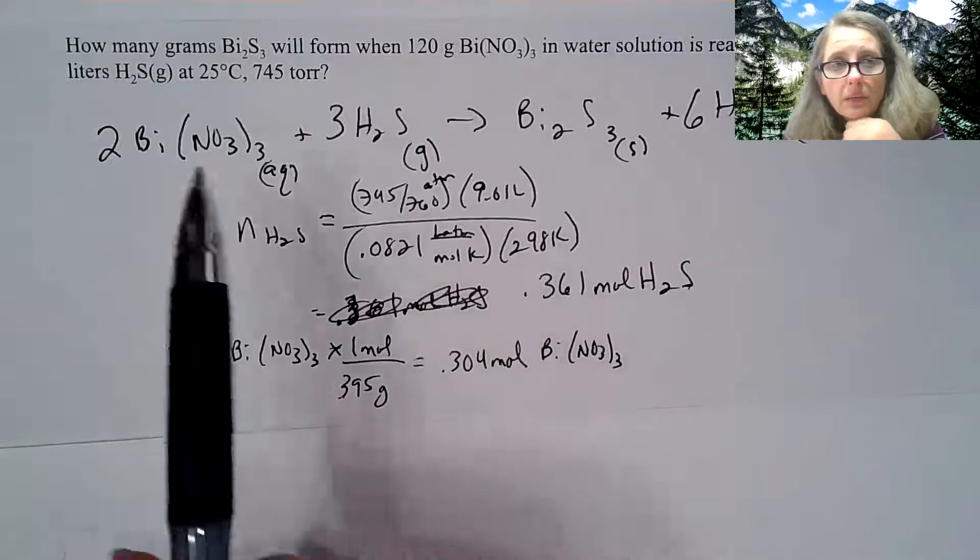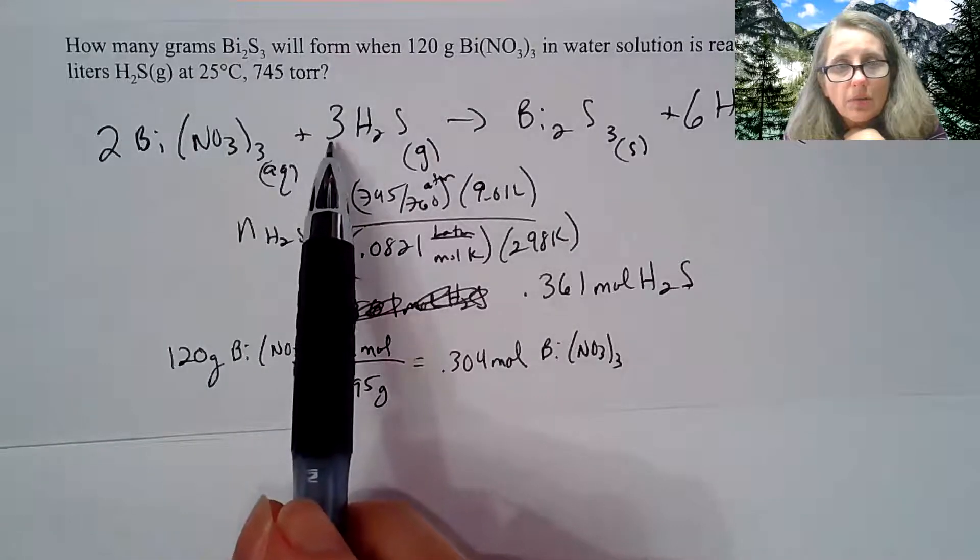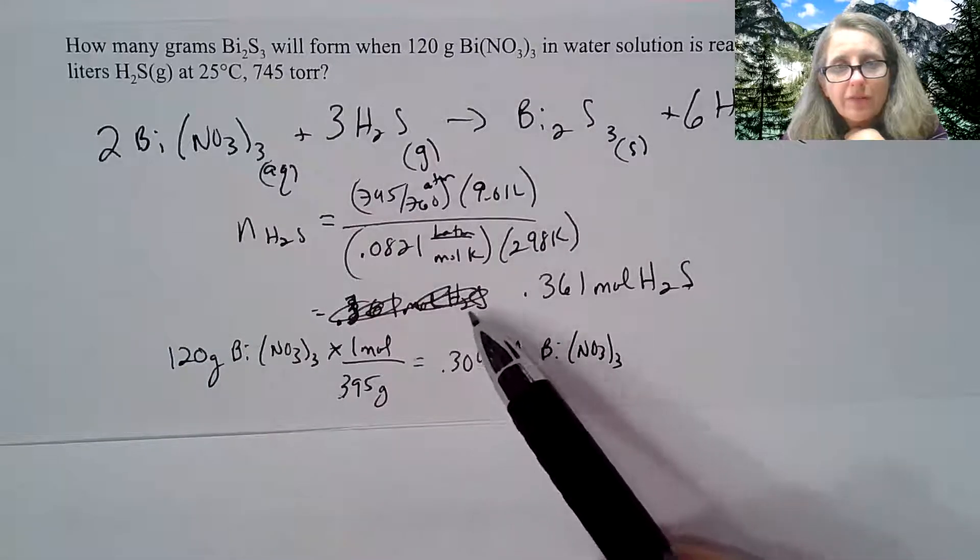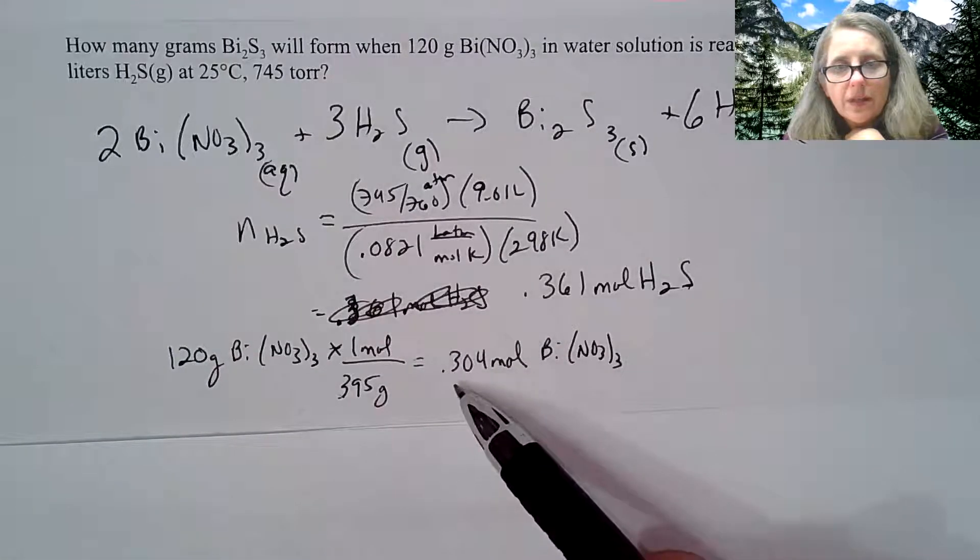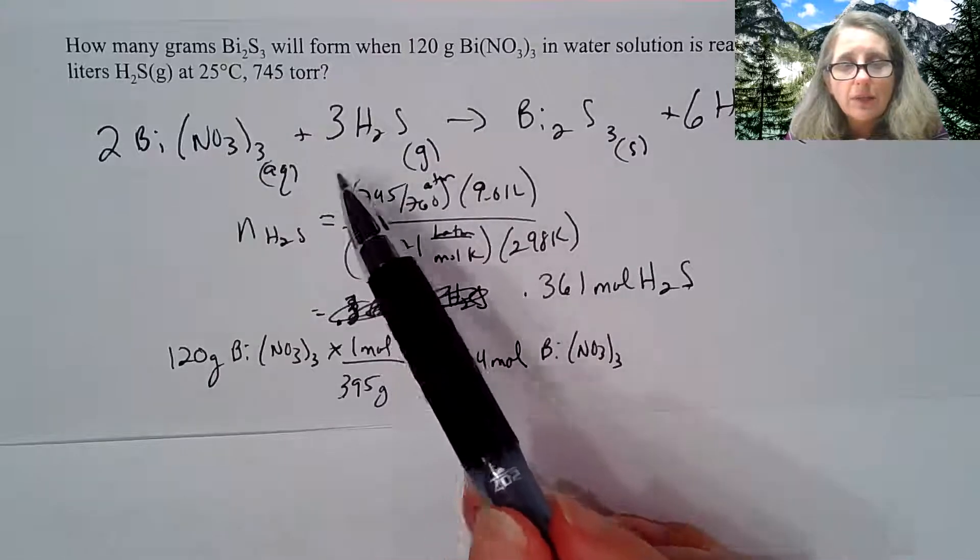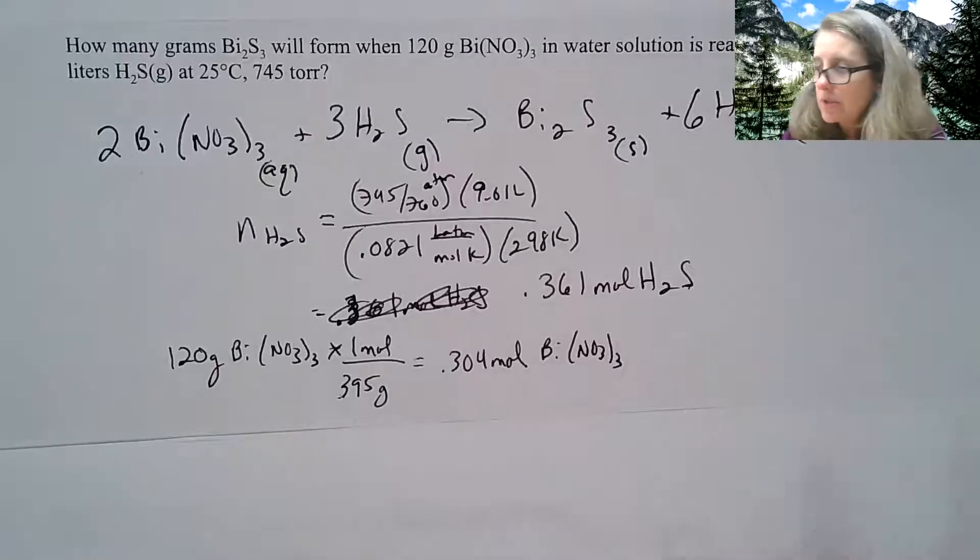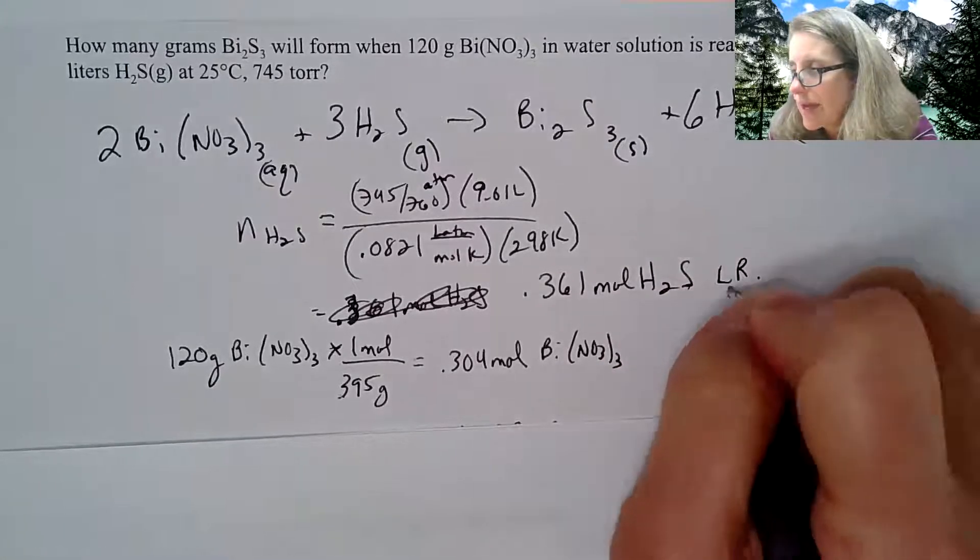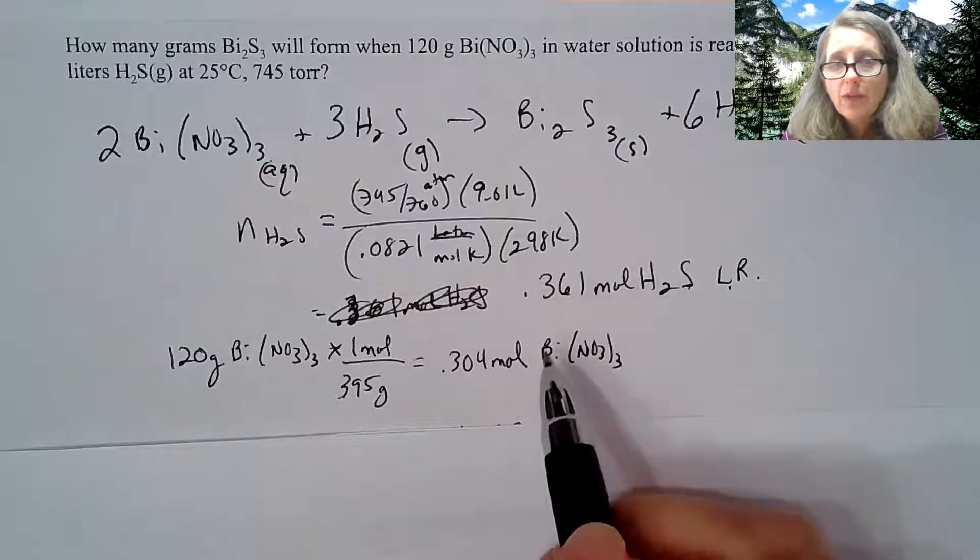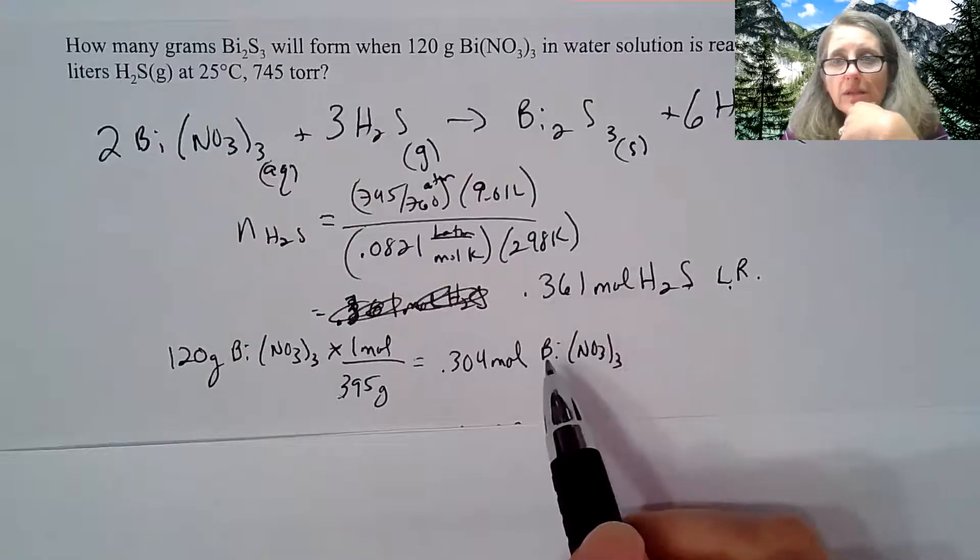I look at my equation - it's a 2 to 3 relationship. Essentially, I have to have 1.5 more of the H2S because it's 3 to 2. You could show your work over here, but it turns out this is your limiting reactant, the H2S. You have to look at the number of moles and figure out who is going to limit you.